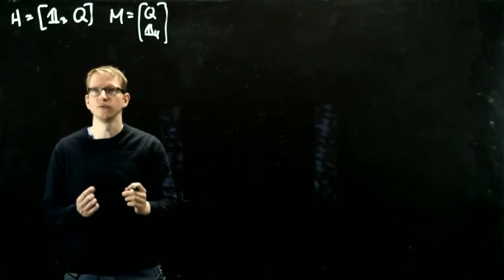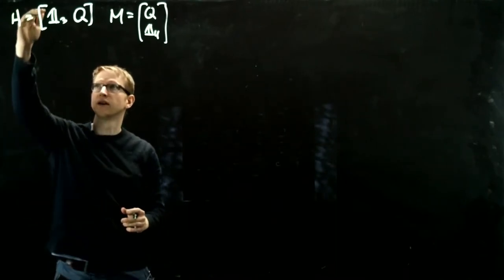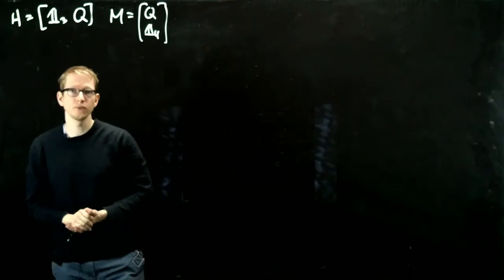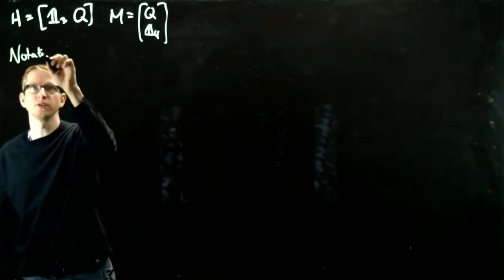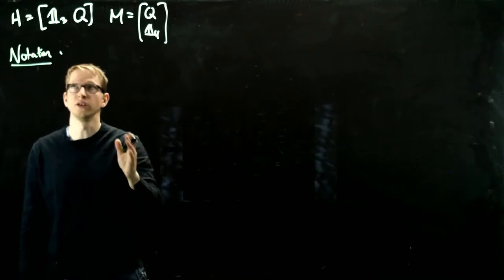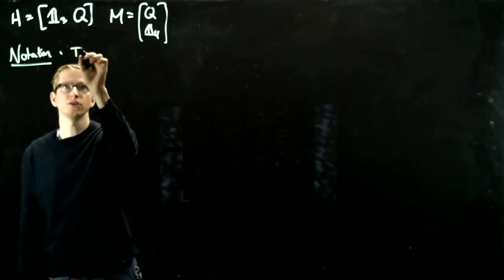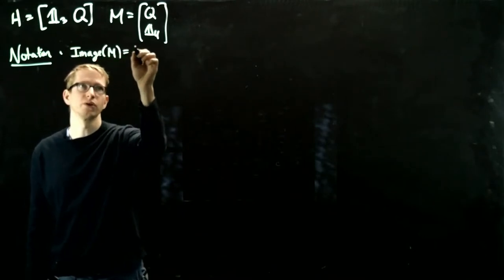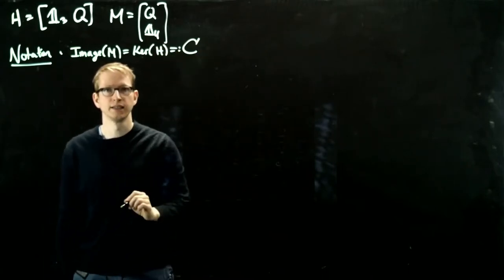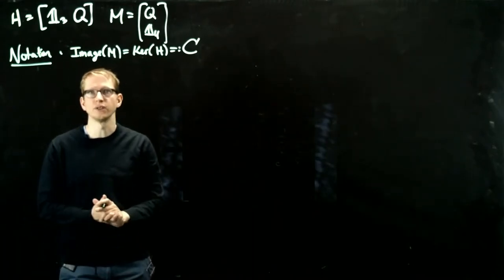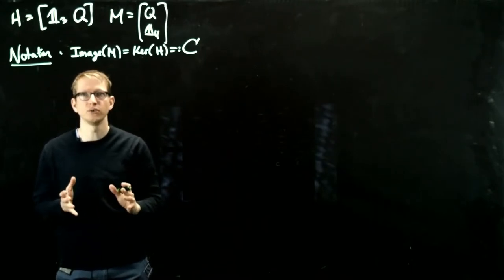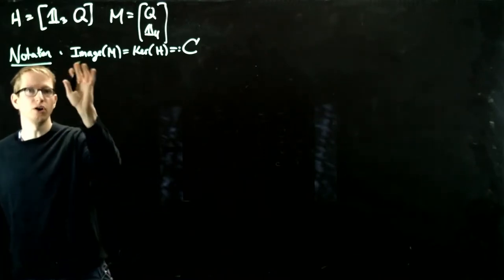Namely that H consists of all of the non-zero vectors in the vector space Z mod 2 to the power where the power is determined by the number of rows here. So given the setup, let's introduce a little bit more notation. That notation is going to be, we're going to define that subspace which was the kernel of H and also the image of M.